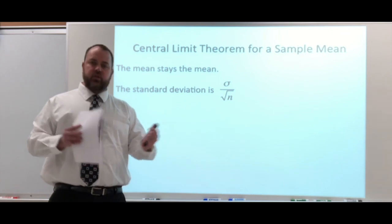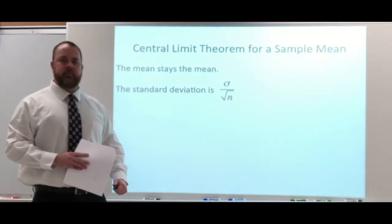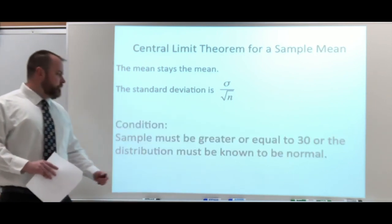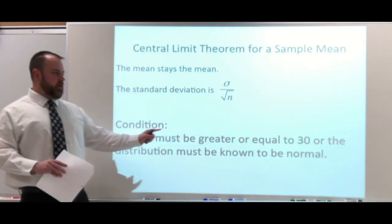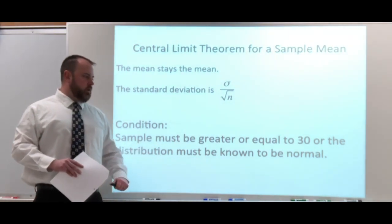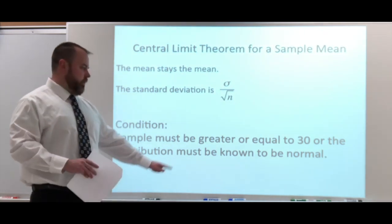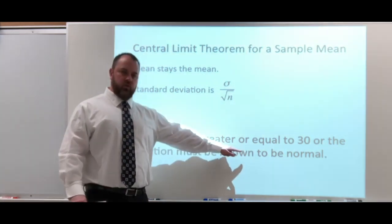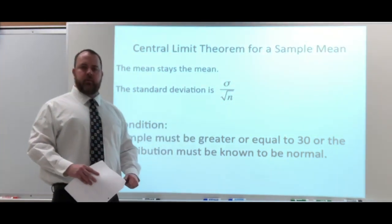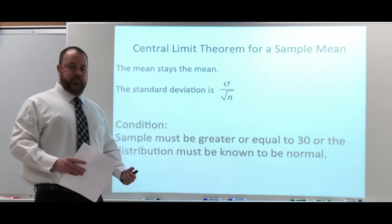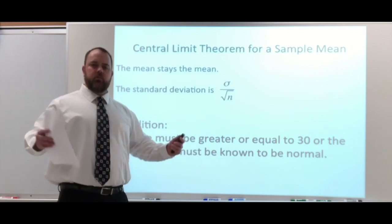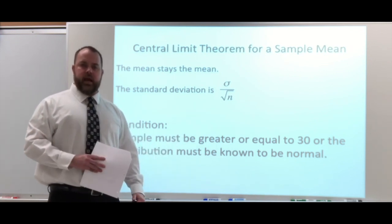That formula is going to make our standard deviation a little smaller. Now, the central limit theorem has conditions: the sample must be greater than or equal to 30, or the distribution must be known to be normal. If the distribution is normal, the second condition is satisfied and sample size doesn't matter — it could be smaller than 30. But if it's not normal, our sample must be at least 30. The larger the sample you take, the closer to a normal distribution you're going to get.